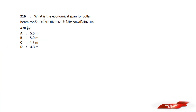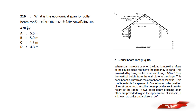What is the economical span for a Collar Beam Roof? Options are: A) 5.5 m, B) 5 m, C) 4.7 m, D) 4.3 m. Answer option B — 5 meters. The economical span for a Collar Beam Roof is up to 5 meters. Answer option B.